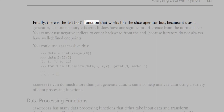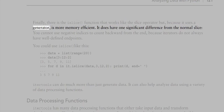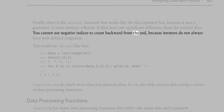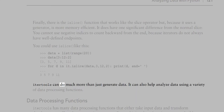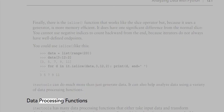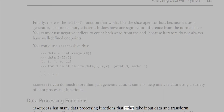The islice function works like the slice operator but, because it uses a generator, is more memory efficient. It has one significant difference from normal slice: you cannot use negative indices to count backward from the end, because iterators do not always have well-defined end points. Itertools can also help analyze data using a variety of data processing functions that either transform elements or filter contents. By combining these functions you can build sophisticated data processing tools.